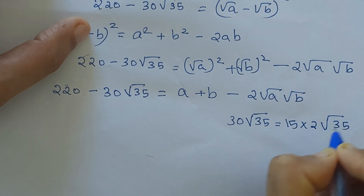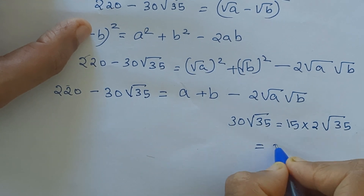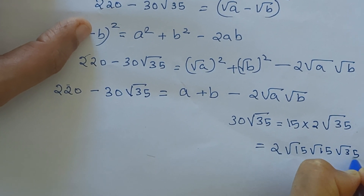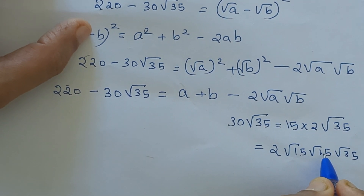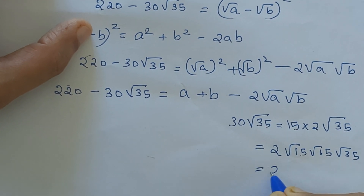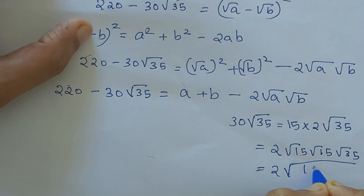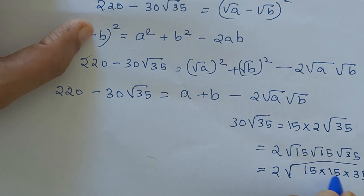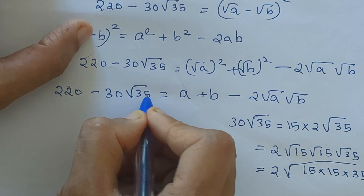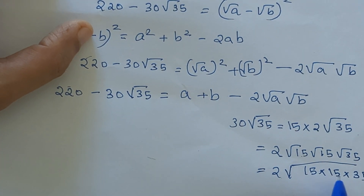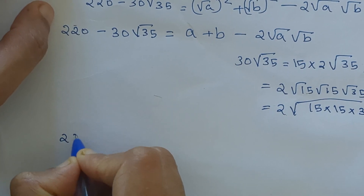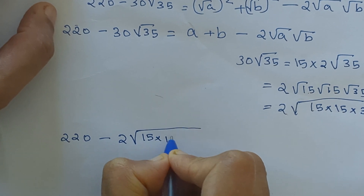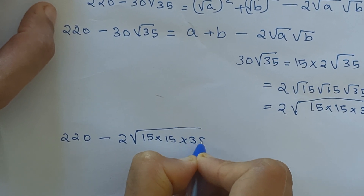We can rewrite 30 root 35 as 2 root(15) into root(15 into 35), that is 2 root(15 × 15 × 35). So 220 minus 2 root(15 × 15 × 35) equals a plus b minus 2 root(ab).